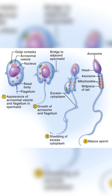During spermiogenesis, the spermatids transform into spermatozoa by undergoing several changes, including the formation of an acrosome, development of the tail, and elimination of excess cytoplasm.